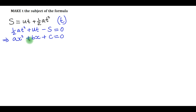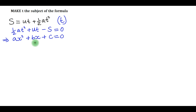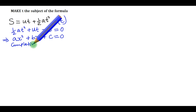In our case, t resembles x. Therefore the constant values a, b, and c are the constant values. So if that is the case, the first step to make t the subject of the formula is to use the completing the square method.